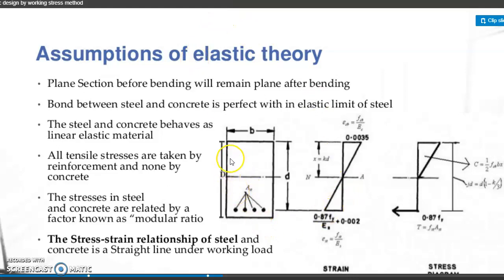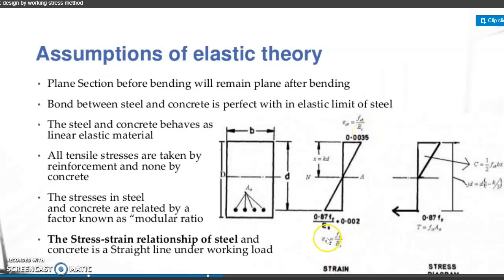Here a singly reinforced section is provided with four numbers of bars. The area of the bar is shown as T; capital D is the overall depth of the section; small b is the breadth of the section; small d is the effective depth. The neutral axis is denoted as NA, the depth of the neutral axis is denoted as KD, and the ultimate strain value for concrete is 0.0035.